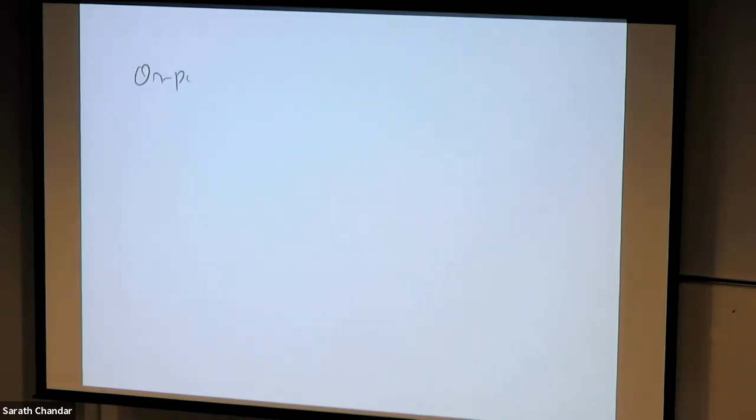How do I find an optimal deterministic policy without the exploring-starts assumption? This is where the whole idea of off-policy methods comes into the picture. We are going to classify algorithms into two types: on-policy and off-policy.